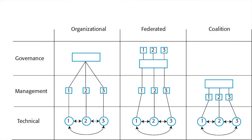In this diagram we see these three classes of system — organisational, federated, and coalition — and we see how the relationship between the governance and the management differs. In each case there are three systems involved, but they are managed in different ways because of the governance model.